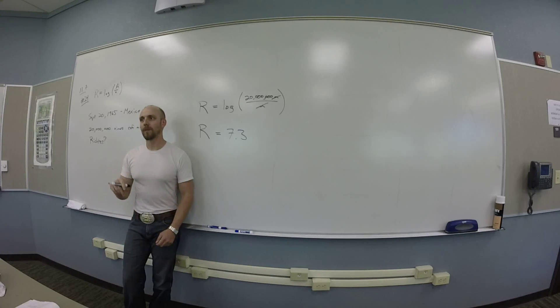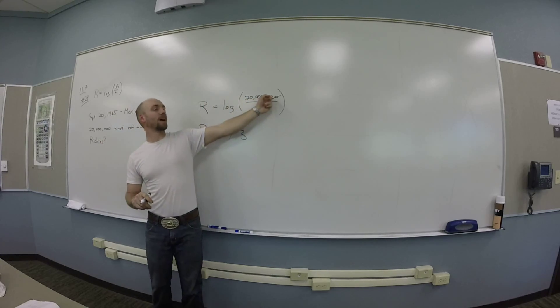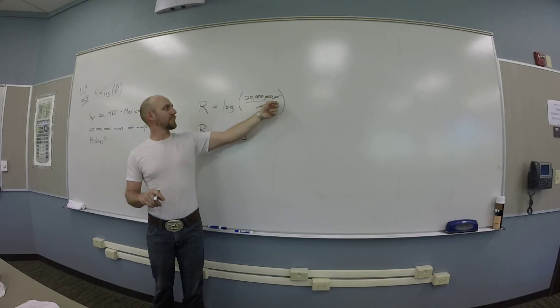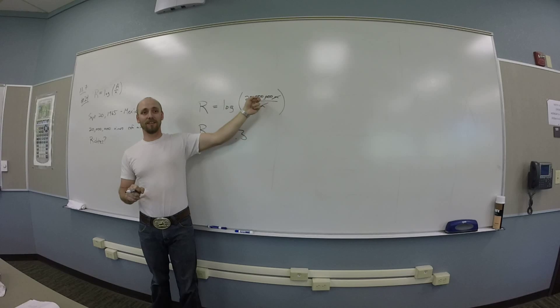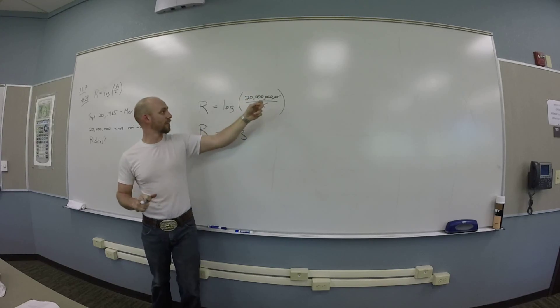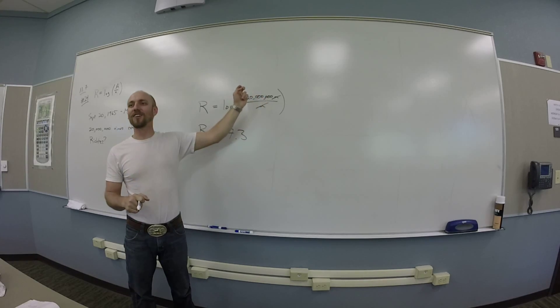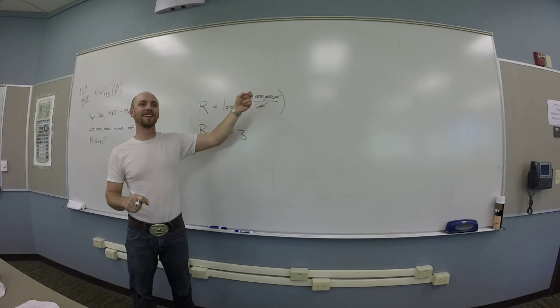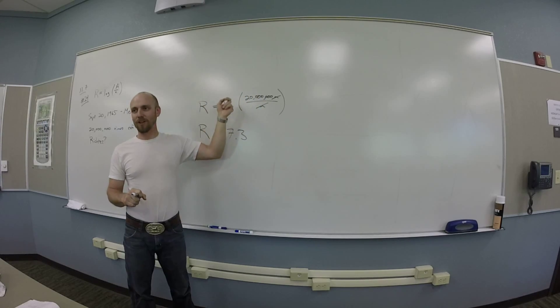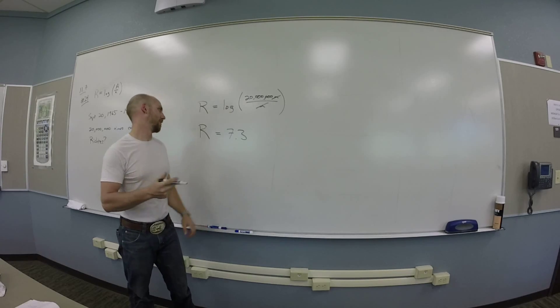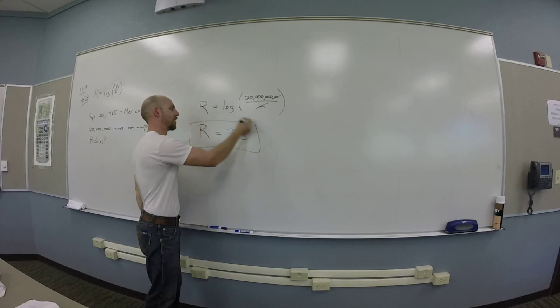But log is also base 10. Yeah. And I could kind of count zeros, right? You guys see that? This is times 10 to the 6th, right? There's 6 zeros, 7 zeros hanging out on the back of this. So, I know it's going to be bigger than 7, and smaller than 8. You guys see that? Okay. So, there's our Richter scale calculation.